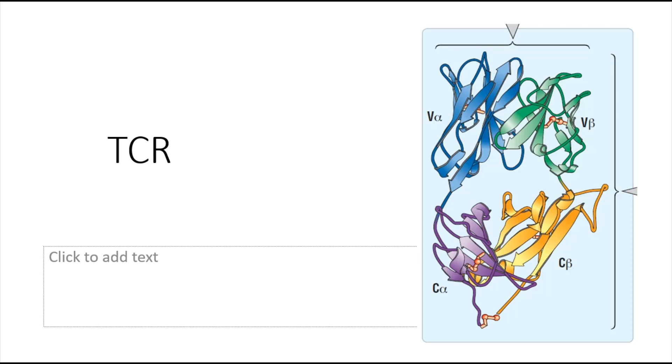TCR synthesis is very similar to the synthesis of light and heavy chains, but there are several structural differences between TCR and antibody. TCRs consist of two chains: one alpha chain and one beta chain. Each chain consists of one variable region and one constant region.